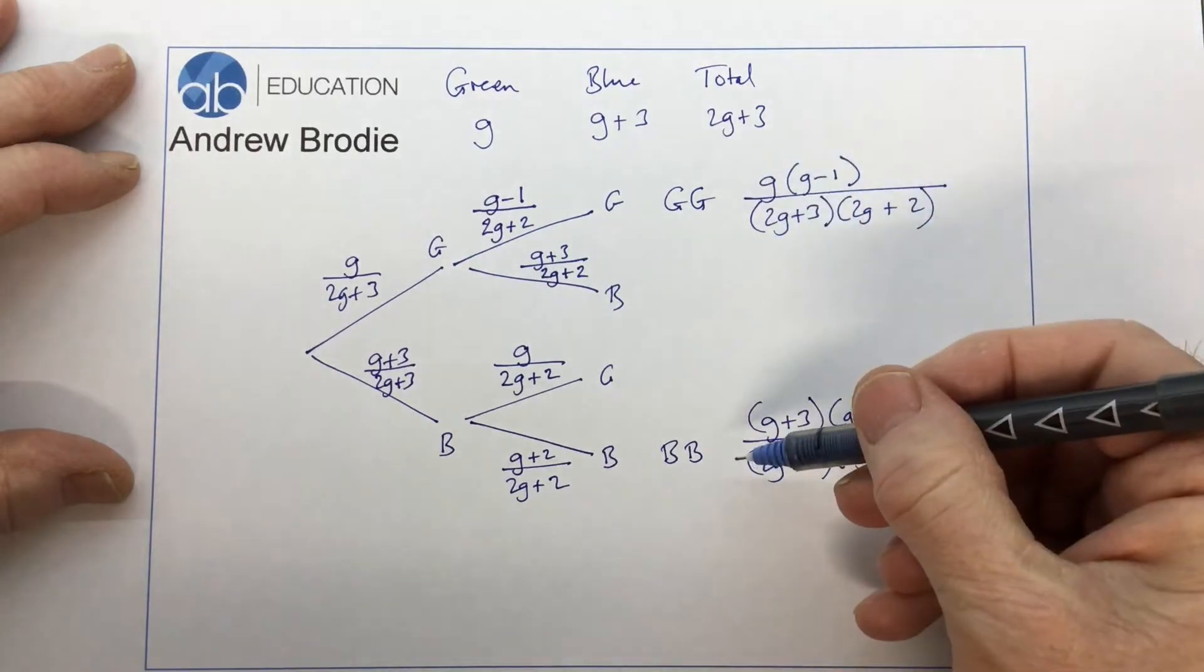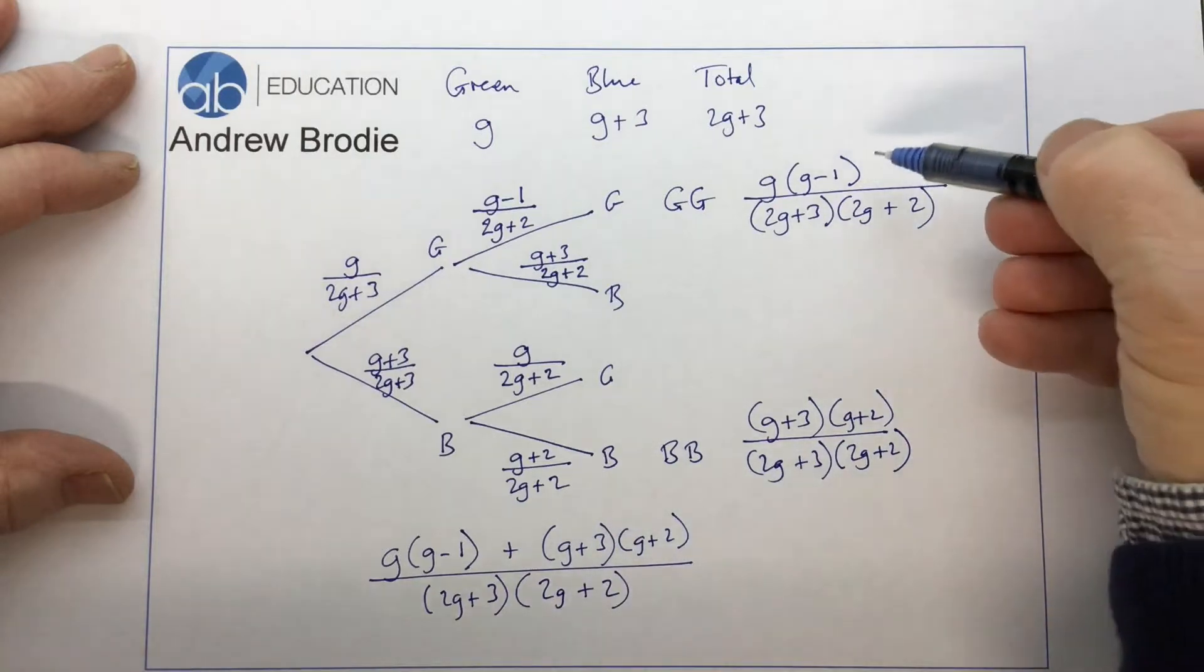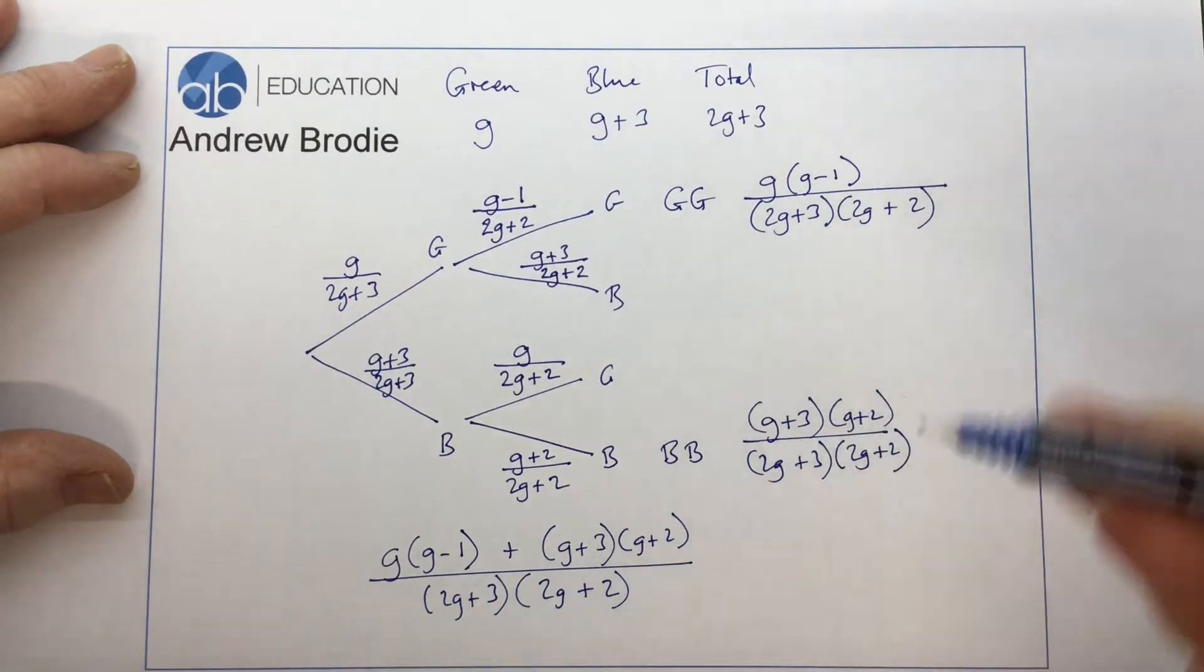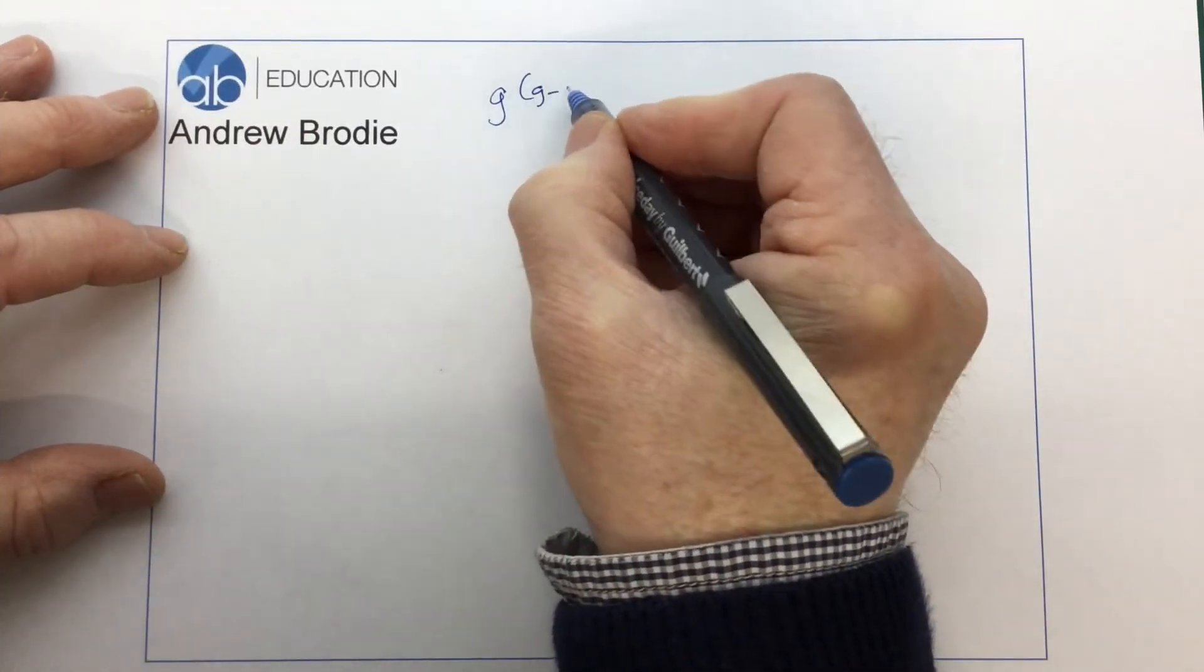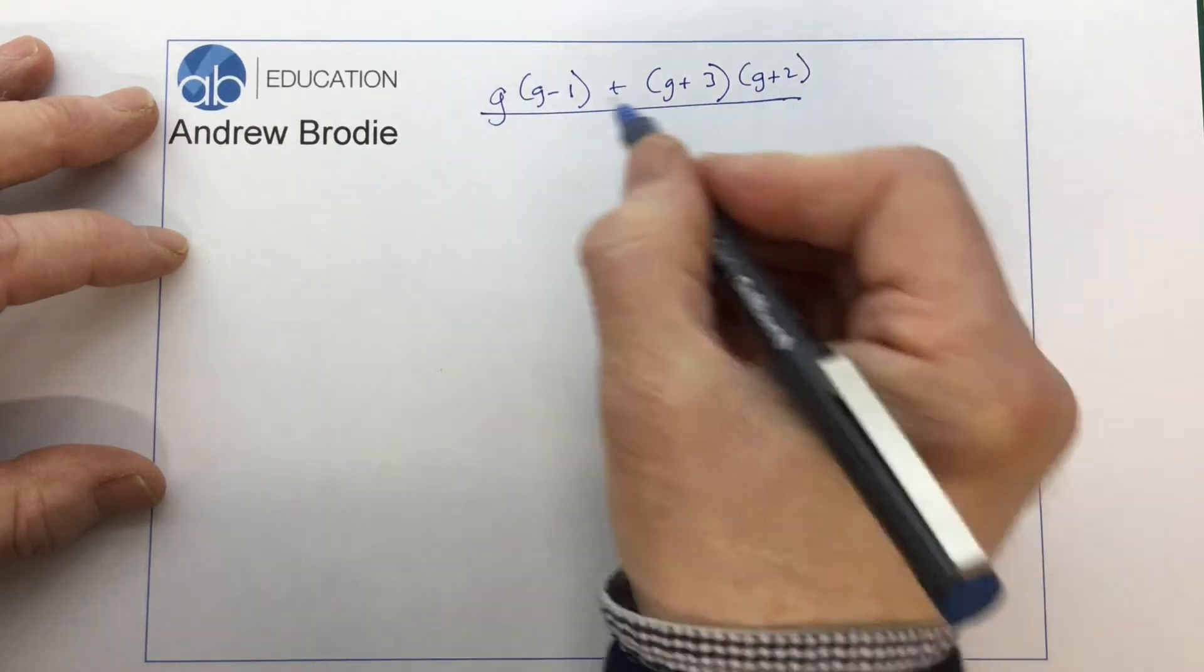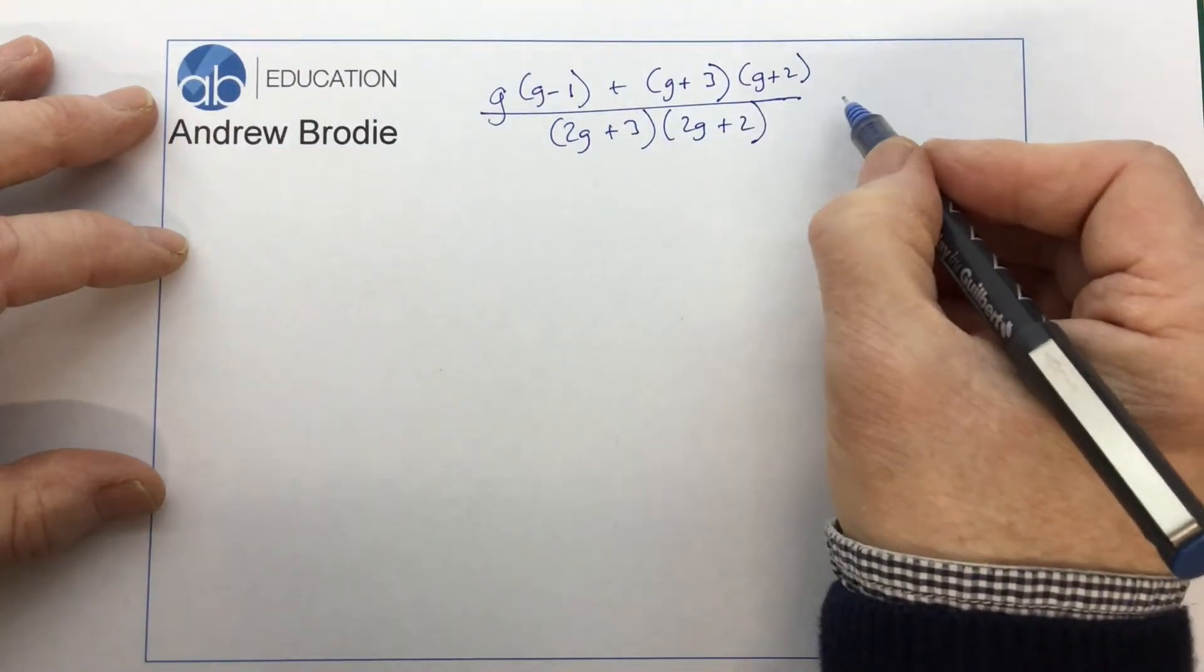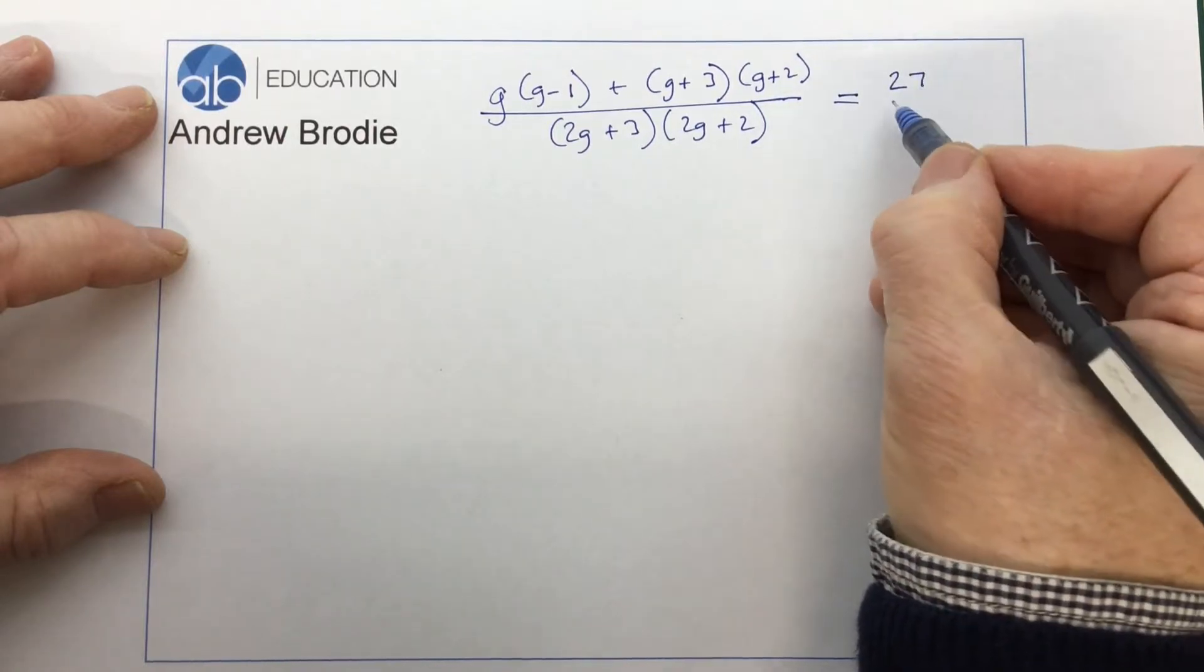Now we need these and these. So all together we have got g times g minus 1 plus g plus 3 times g plus 2, all over 2g plus 3 times 2g plus 2. That plus that all over the same denominator because we're just adding two fractions. And now we're coming back to what we were told in the first place, that the probability of that happening is 27 out of 55.